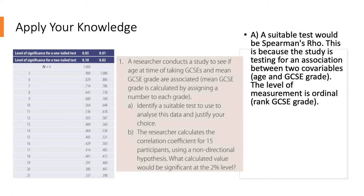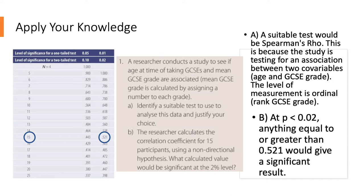And then B, it asked you what calculated value would be significant at 2% level. So you needed to look at 15 because the number of participants was 15. Then because it was significant levels of 2 and it was a non-directional hypothesis, you had to be looking at this number here. So 0.521, that's the critical value. So therefore the calculated value had to be equal to or greater than 0.521 to give a significant result because Spearman's rho has an R in it. Therefore the calculated value has to be greater than the critical value.